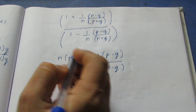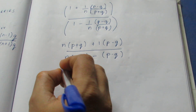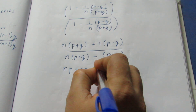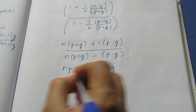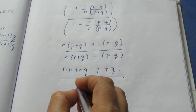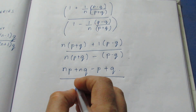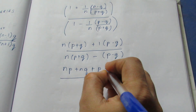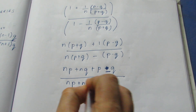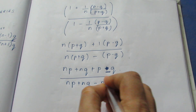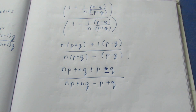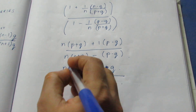Now we multiply out the brackets. The numerator gives: np plus nq minus p minus q. Wait — the numerator is np plus nq plus p minus q, and the denominator is np plus nq minus p plus q. Rearranging by grouping p and q terms separately.